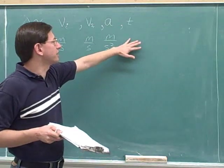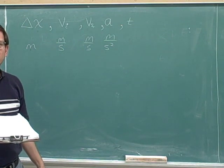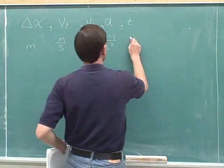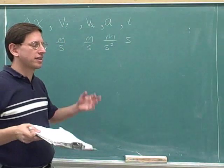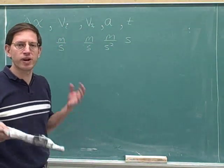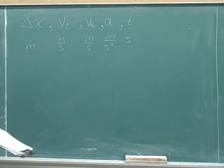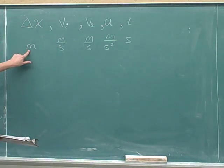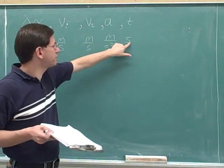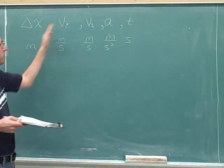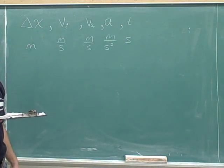The official units for time are seconds, abbreviated as s. In ordinary life we're more likely to use minutes or hours, but the standard unit for time in physics is seconds. So here are all our standard units: meters, meters per second, meters per second, meters per second squared, and seconds. Those should all be memorized if you haven't already done so.